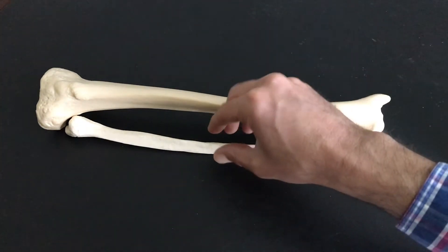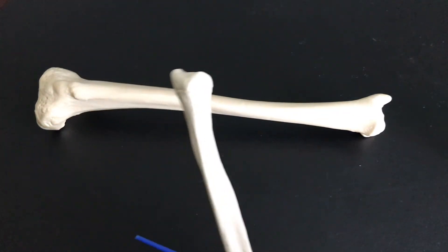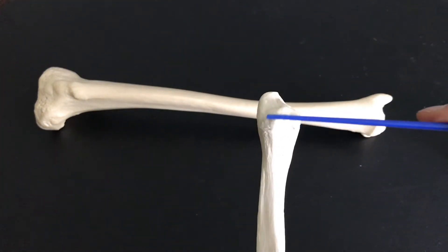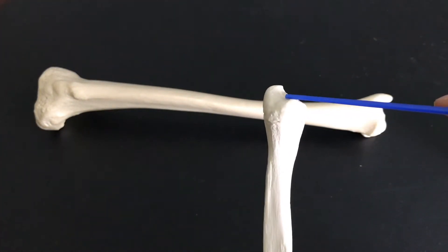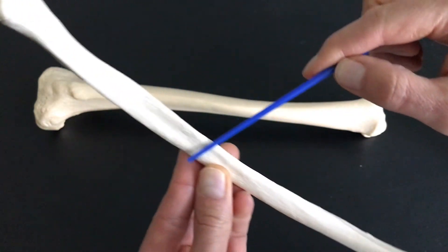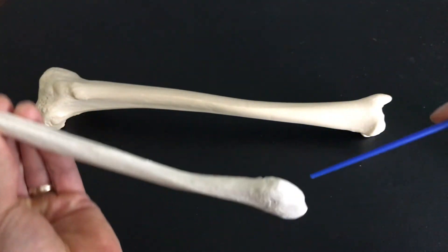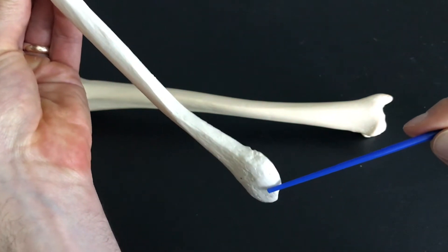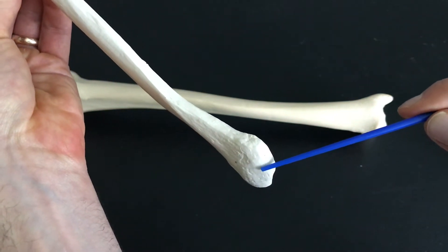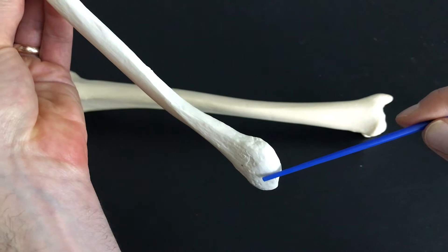Let's take these one at a time. If we look at the fibula, at the superior end we have the head, we have the diaphysis (the diaphysis is the shaft of the bone), and then we come down to the inferior end and we have what we call the lateral malleolus.